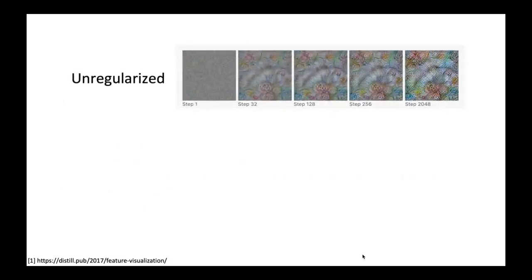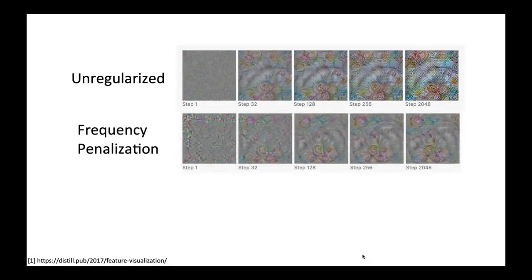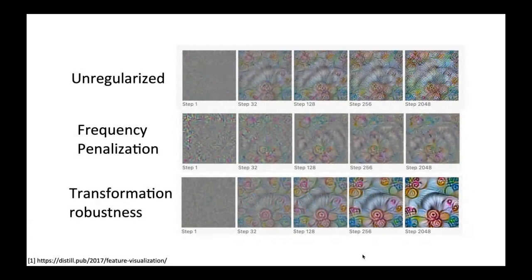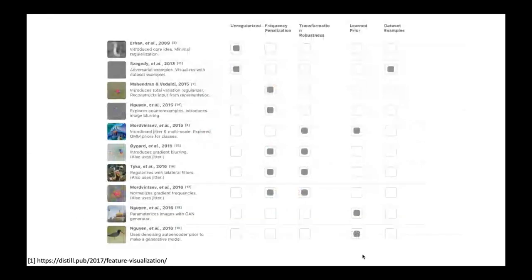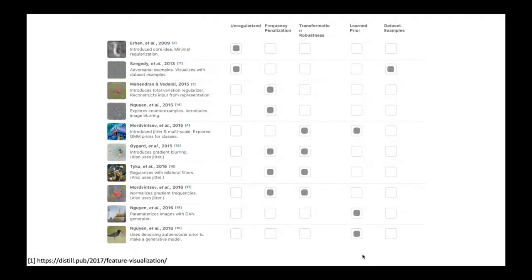Here is the unregularized feature visualization. When we apply frequency penalization, we see a slightly smoother pattern. After we apply transformation robustness, we see a basically flourish pattern that people can understand — this unit is detecting some flower. Here is a list of methods proposing different tricks to make feature visualization more realistic: you have frequency penalization, transformation robustness, and some papers combine them together for mixed visualization. Some methods use a learned prior like a GAN or autoencoder — in the last two rows, the visualization of the bird node is already photorealistic. Those are several amazing works worth further reading.